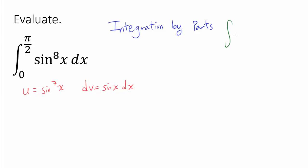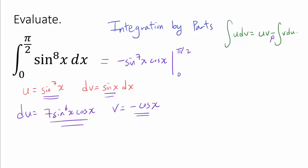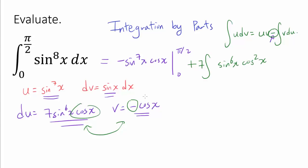Using standard integration by parts, ∫u dv = uv − ∫v du. From this, du is 7·sin(x)^6·cos(x) dx, and v is −cos(x). So we get that our integral equals uv = −sin(x)^7·cos(x) evaluated from 0 to π/2, minus ∫v du. The two negatives give a plus, and multiplying v and du together yields 7·sin(x)^6·cos²(x) dx, integrated from 0 to π/2.